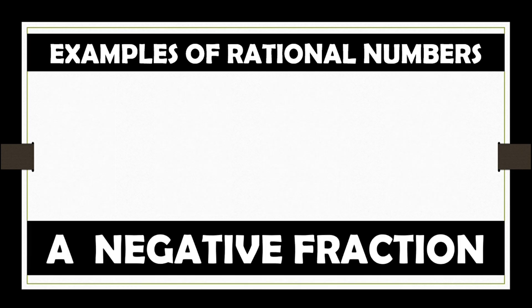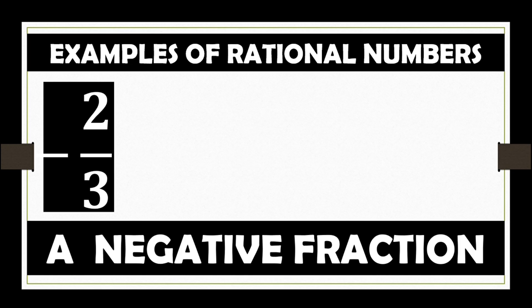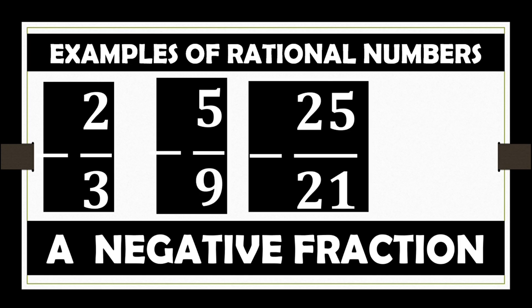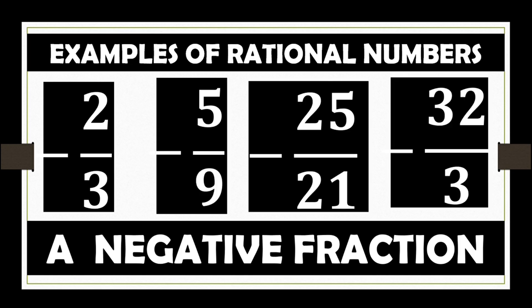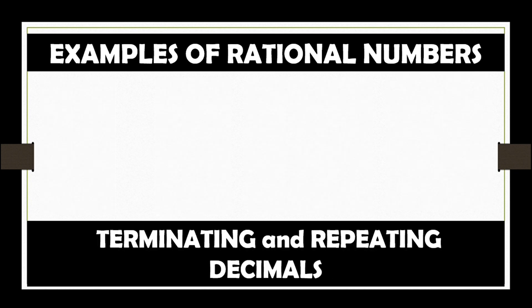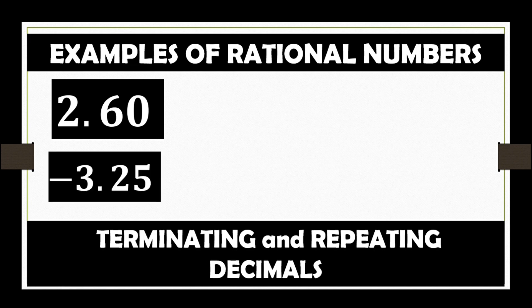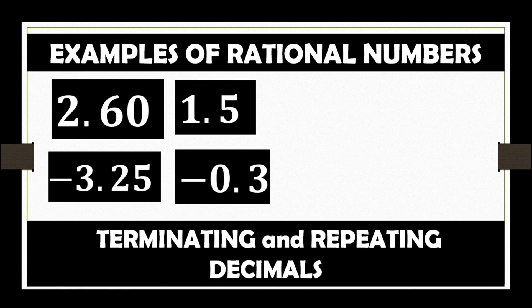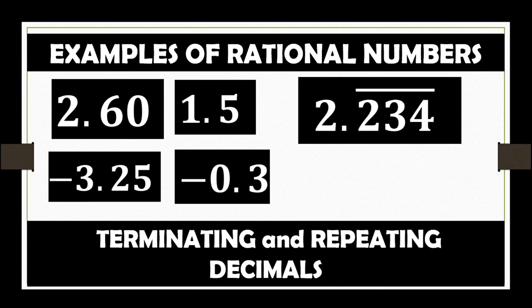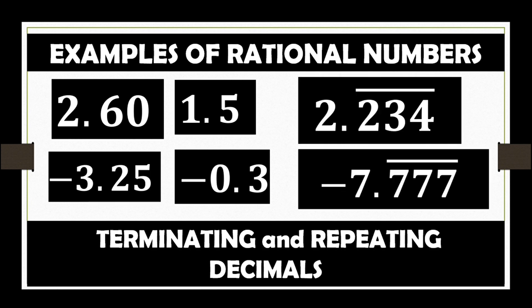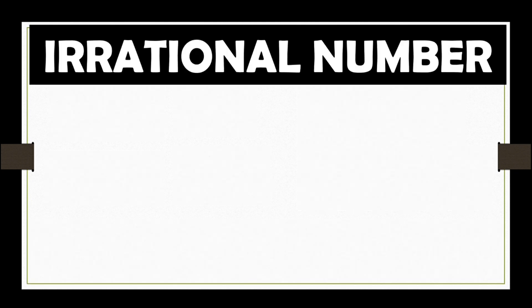A negative fraction like negative 2 thirds, negative 5 ninths, negative 25 over 21, and negative 32 over 3. Terminating and repeating decimals like 2.60, negative 3.25, 1.5, negative 0.3, 2.234, and negative 7.777.